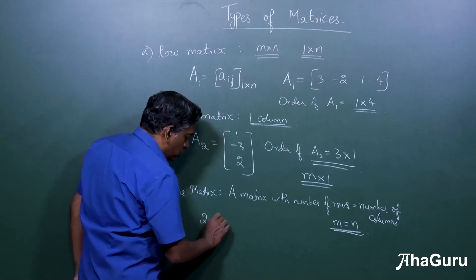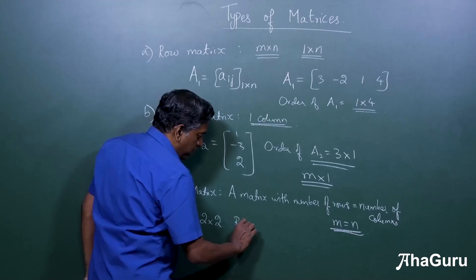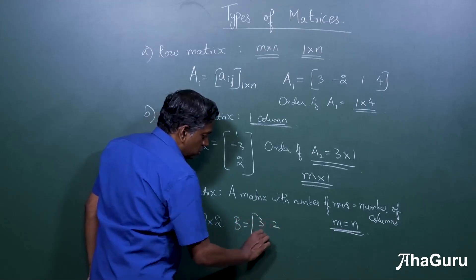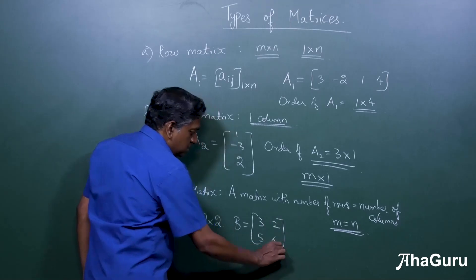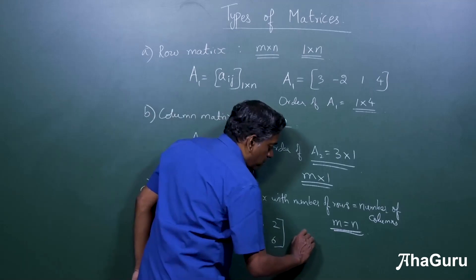So a square matrix, for example, a two by two matrix, would be a square matrix. Let's say three, two, five, six. This is a square matrix. Two rows, two columns. You can have three by three.